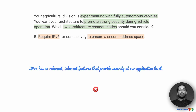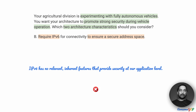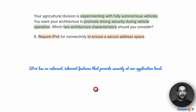Option B suggests requiring IPv6 to ensure a secure address space. Although IPv6 has some security enhancements compared to IPv4, it has no inherent features that are directly relevant to our application. Simply shifting to IPv6 does not give us anything automatically, and therefore option B is not a good option.